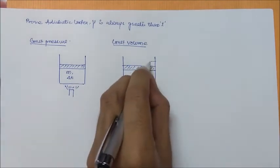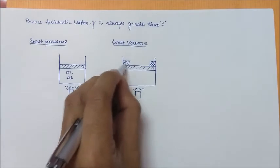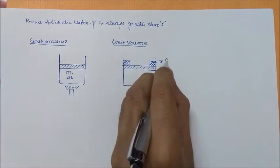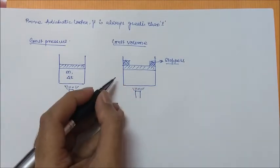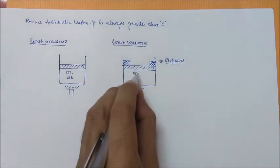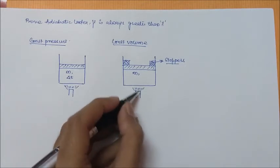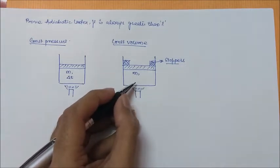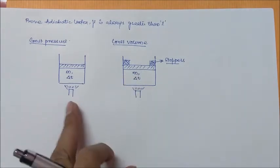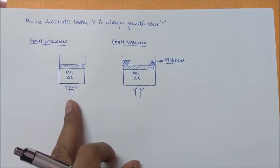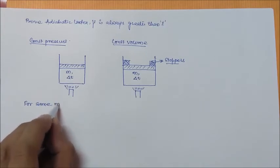For Case 2, constant volume: we have the same cylinder-piston arrangement, but this time it has stoppers to prevent the piston from moving. It has the same mass of gas m, and heat is transferred to the cylinder such that the temperature difference of the gas is the same as in the constant pressure case.